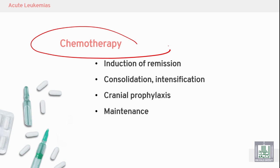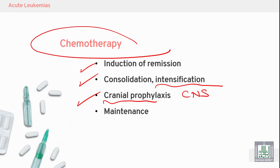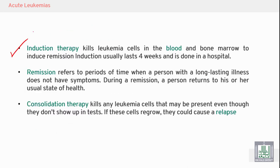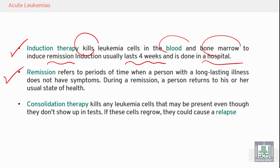Chemotherapy uses chemical drugs to induce remission and to eradicate malignant cells from the bone marrow, peripheral blood, and tissues — especially the cranial CNS in ALL — followed by maintenance doses to maintain remission. Induction therapy kills leukemic cells in the blood and bone marrow to induce remission; induction usually lasts one month or four weeks, done in hospital. Remission refers to the period when a person with a long-lasting illness does not have symptoms and may return to their usual state.